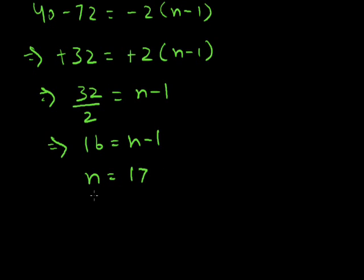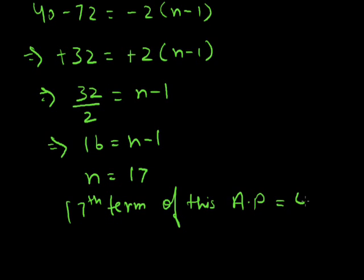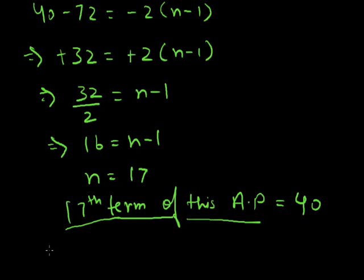So the 17th term of this AP is equal to 40, which is what we had to find out. We've seen how to use the formula for finding the nth term of an AP — instead of finding the nth term directly, we found the value of n, which is 17.